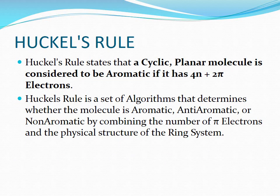Huckel's rule states a cyclic planar molecule is considered aromatic if it has 4n+2 pi electrons. Huckel's rule is a set of algorithms that determines whether a molecule is aromatic, anti-aromatic, or non-aromatic by combining the number of pi electrons and the physical structure of the ring system.